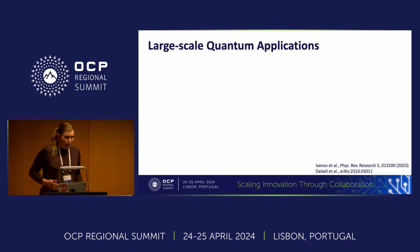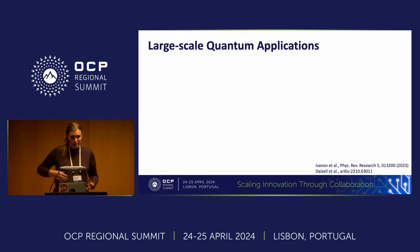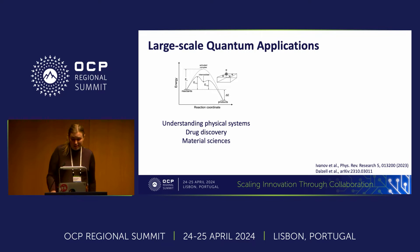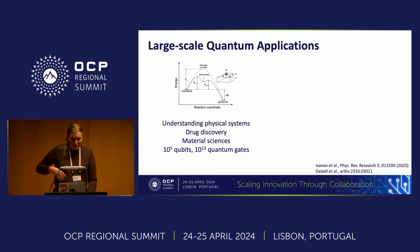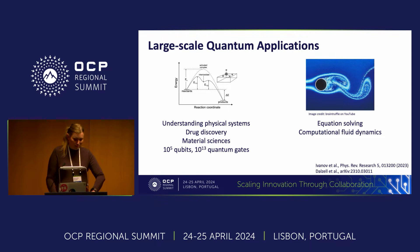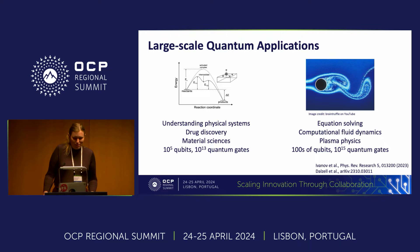Why do we need error correction? If we look at some of the applications where quantum computers are expected to deliver the most significant impact — applications such as understanding physical systems, catalyst reactions or molecular dynamics — these have applications in drug discovery or material sciences. And these require tens if not hundreds of thousands of qubits and many orders of quantum gates. Similarly, solving nonlinear differential equations, with applications in computational fluid dynamics and plasma physics, requires hundreds of qubits and orders of magnitude of quantum gates.